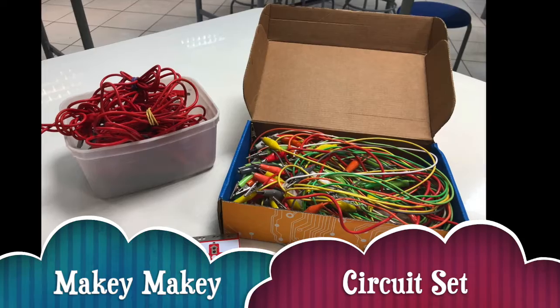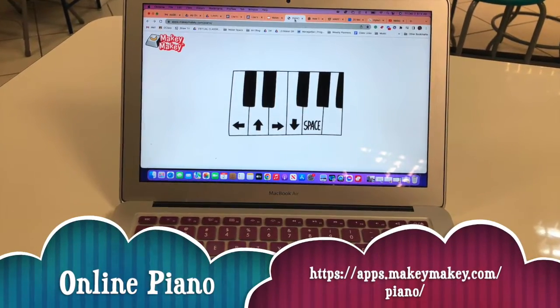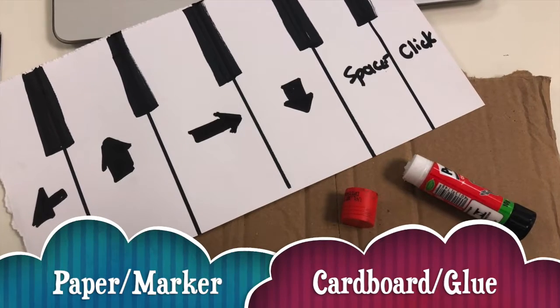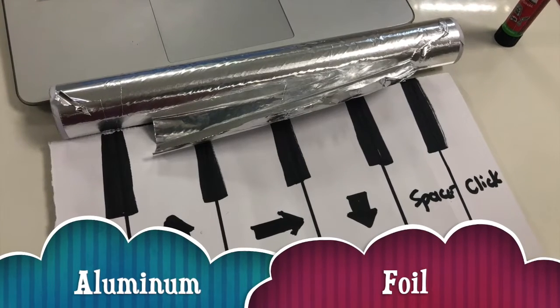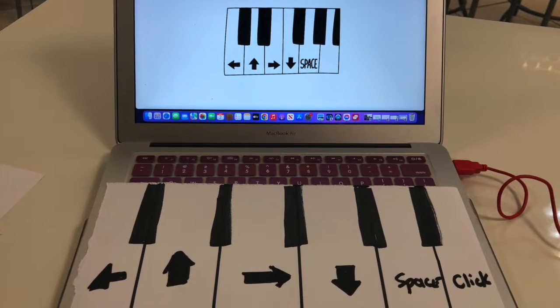Okay, let's start getting the materials. First, you need a Makey Makey circuit set as well as the online piano. Then you'll need some paper, marker, cardboard, glue, and some aluminum foil or tin foil for your piano.